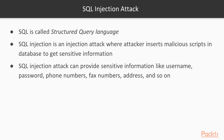SQL injection can provide sensitive information like usernames and passwords — for example, the admin panel credentials of a website. An attacker can also wipe out the complete data from a database, and can retrieve phone numbers, fax numbers, and addresses of customers. This is the kind of sensitive information an attacker can obtain from a SQL injection attack.